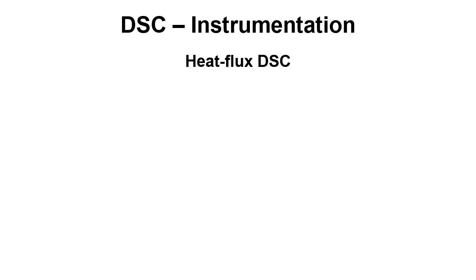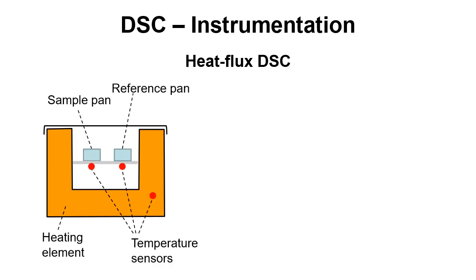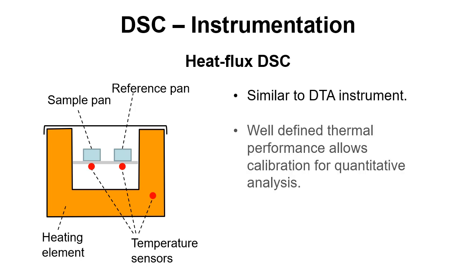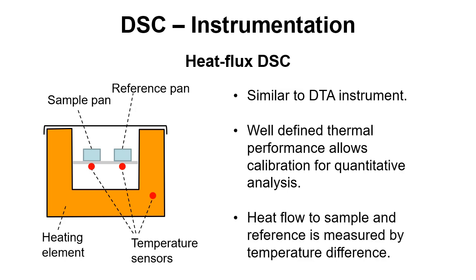In terms of instrumentation, the heat flux DSC looks quite similar to a DTA. We have the sample pan and the reference pan in a heating element, along with temperature sensors. It is similar to a DTA, and if we have well-defined thermal performance this allows us to calibrate for quantitative analysis. The heat flow to the sample and reference is measured by looking at the temperature difference between the furnace and the sample pan.